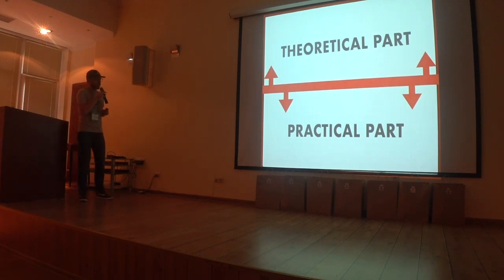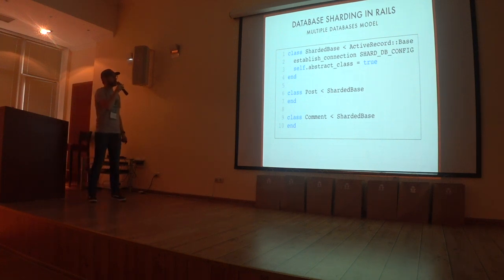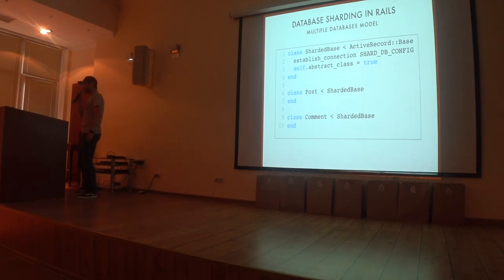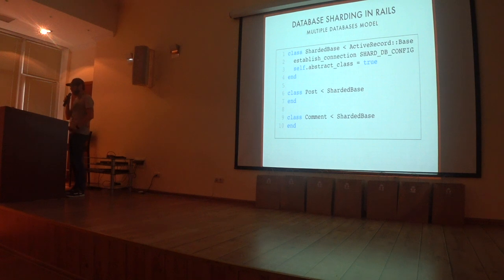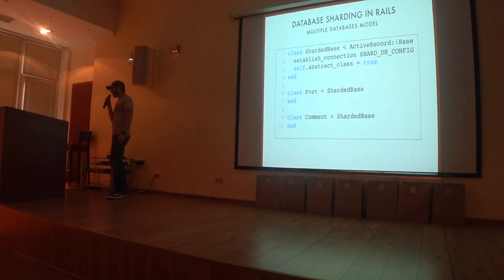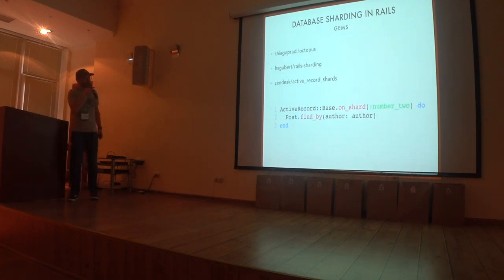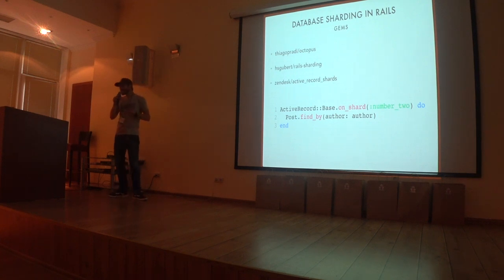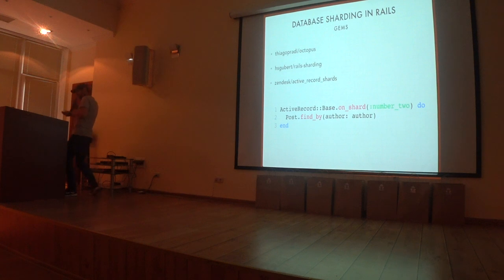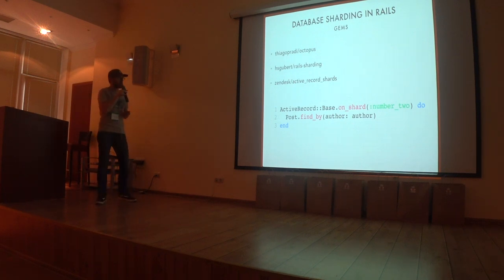Now let's think about the practical part. If you choose a functional approach, you can easily set it up in a Rails application by establishing a connection in your model, and you have to take care of migrations. This may also be available by default in a future version of Rails. If you use an expressional or metadata approach, you need to manage your database connections. There are gems that already do this — for example Octopus, Redis Sharding, or ActiveRecord Shards, which we use at Talkable.